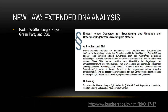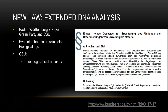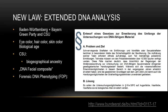There is now a new law proposed by Baden-Württemberg, governed by the Green Party, and Bavaria, governed by the CSU, to draw more conclusions from DNA. They want to look at eye color, hair color, skin color, and biological age. The conservative party also wants to look at biogeographical ancestry — basically a synonym for ethnicity, and some may even say race. This law is often called the DNA facial composite, but in science it's called forensic DNA phenotyping — looking at genes which determine the appearance of a person.